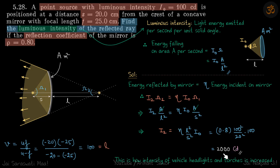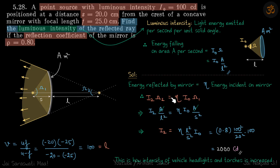The initial intensity was just 100 candela and it has increased by 20 times. This is how the intensity of vehicle headlights and torches is increased. Without the concave mirror at the back, the energy spreads out and intensity is very low. The concave mirror focuses the energy — since s is 20 and l is 100, the image is five times further away, so the light beam is nearly parallel and very high intensity. That's how torch lights work.